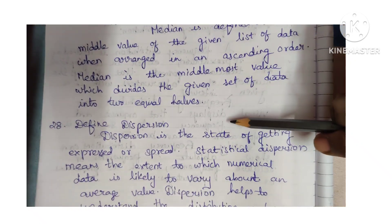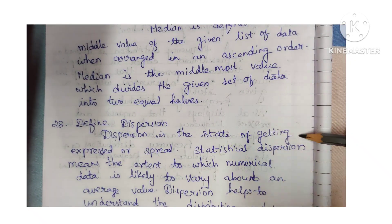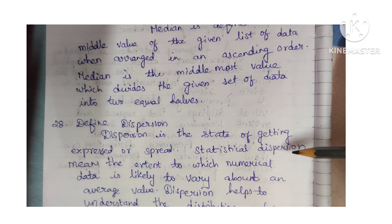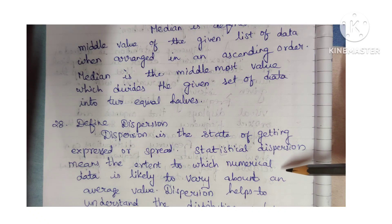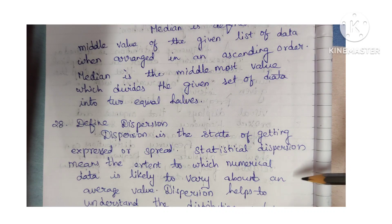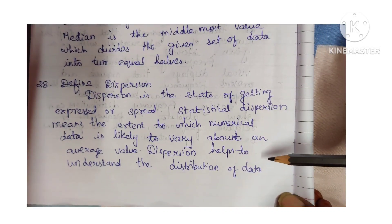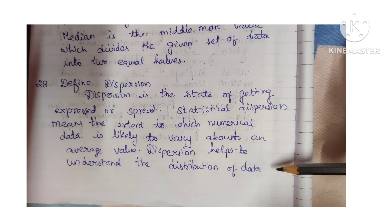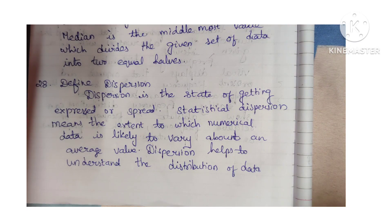Define dispersion. Dispersion is the state of getting dispersed or spread. Statistical dispersion means the extent to which numerical data is likely to vary about an average value. Dispersion helps to understand the distribution of data.